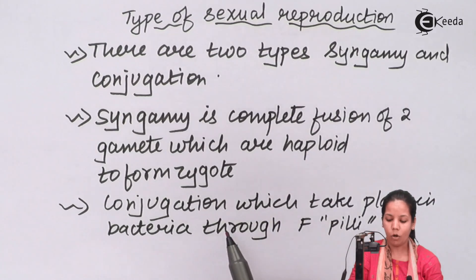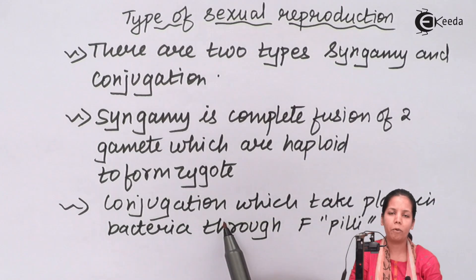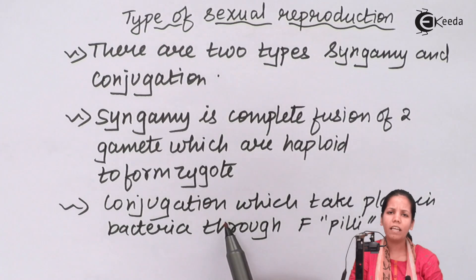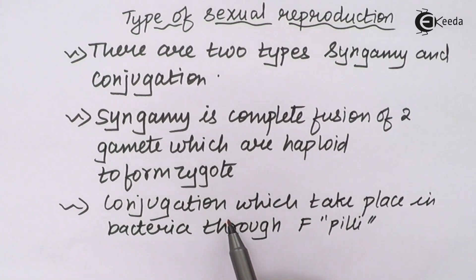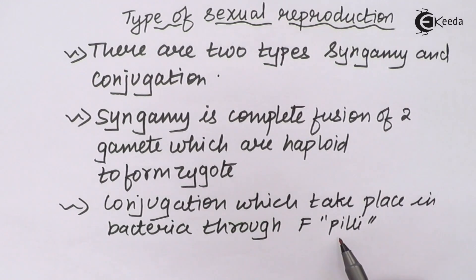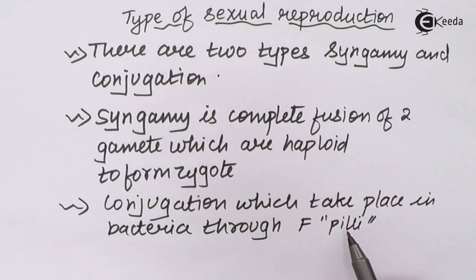Conjugation is a very important feature of bacteria. Bacterial cells form a transfer pathway just to transfer genetic material, especially during experiments of genetic transfer. This pathway is nothing but F-pili, which helps to transfer genetic material in bacteria.